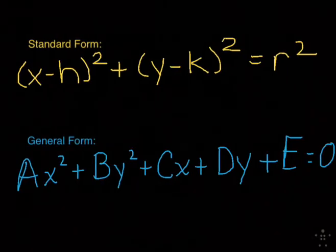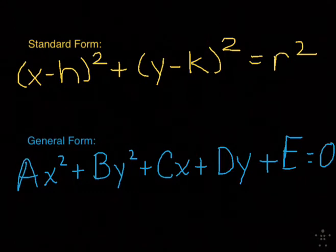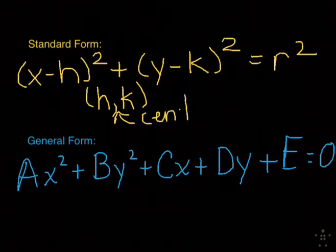General form has its purposes, but overall we like standard form. Just going back to what you've seen before, standard form is (x - h)² + (y - k)² = r², where h and k tell you the center and r gives you the radius of the circle.